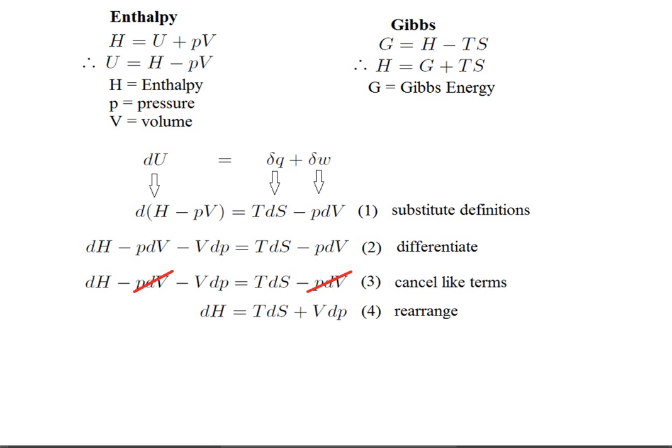Step three and four are purely algebra. We're canceling the work term, the minus PdV, and then we're moving the minus VdP term over to the right-hand side.